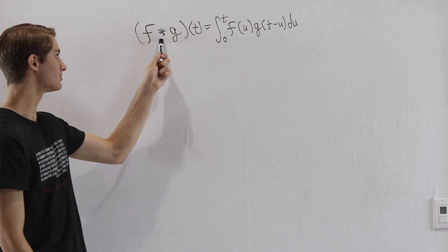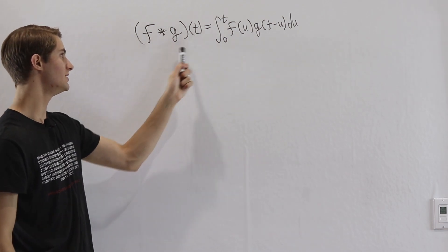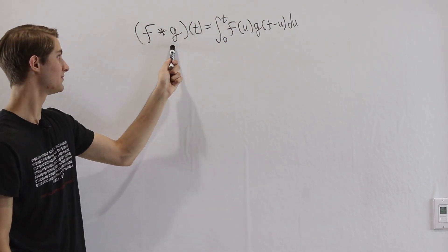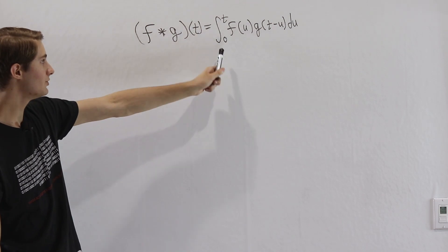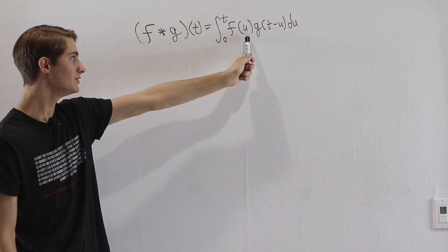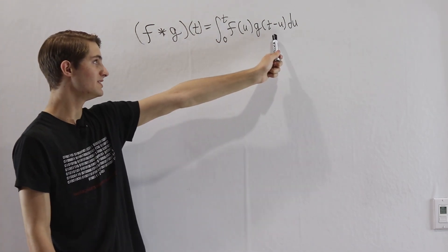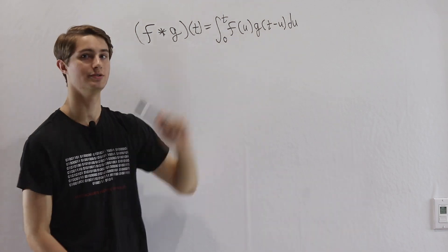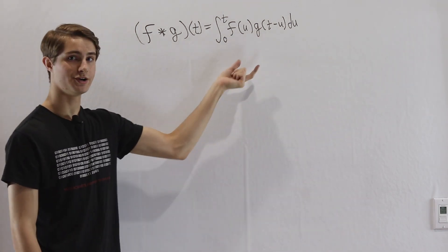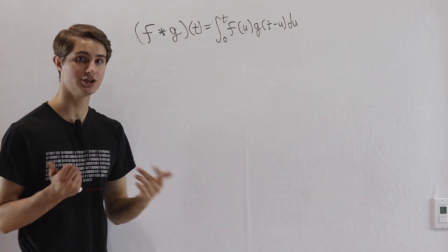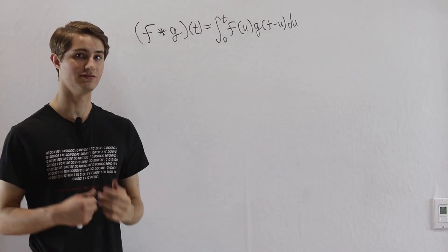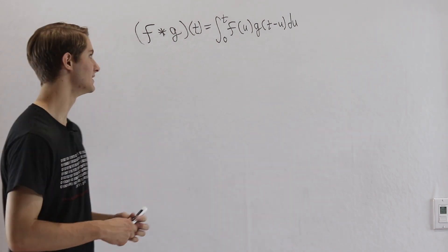We denote it by f★g of t — this is the convolution of f with g — and that equals the integral from 0 to t of f of u times g of t minus u, du. This might seem like a really random and complicated expression, but it's going to be very useful by the end.